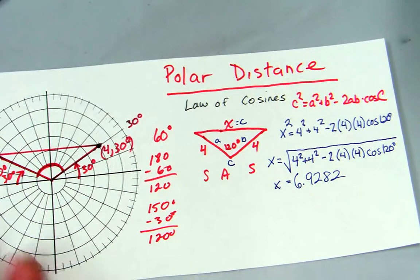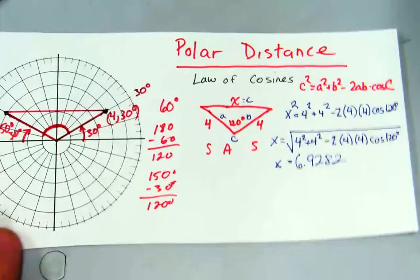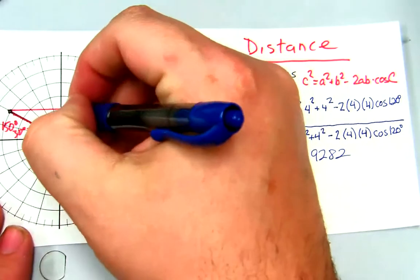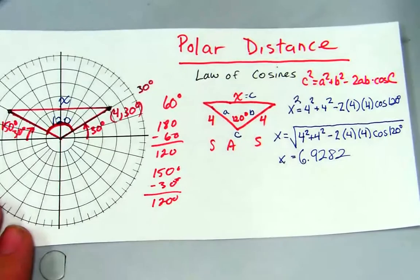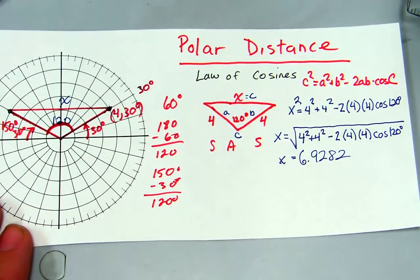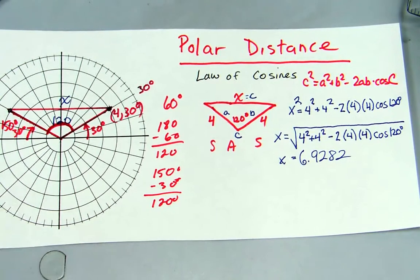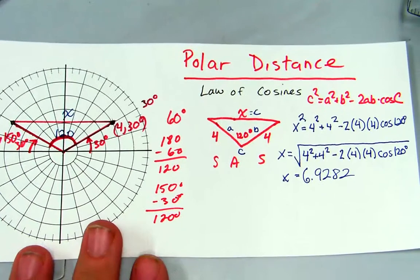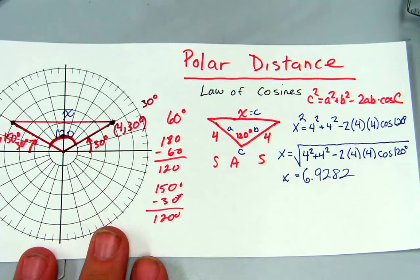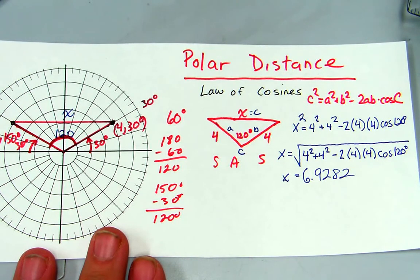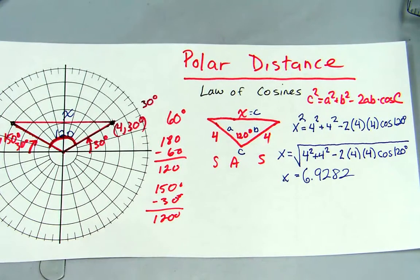The whole idea is you have to find this angle — that's 120 degrees — that's x, use the law of cosines, and you are golden. Make sure when you're using your calculator that you put the degrees in there and that you actually put the multiplication in between those values.